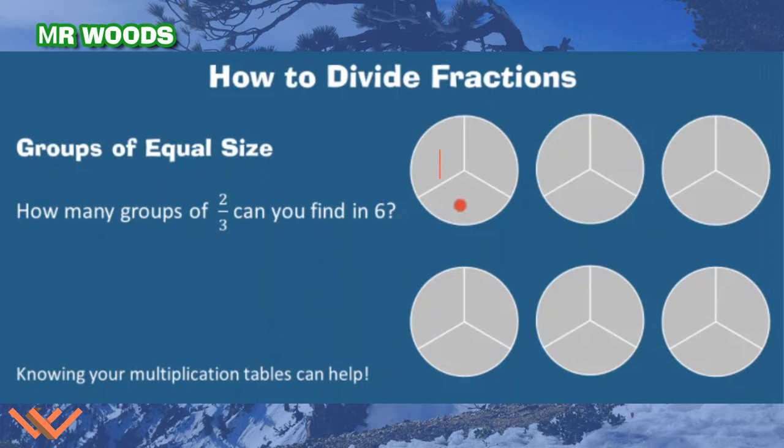Well, I have 1 group of 2 thirds. This is my 2 groups of 2 thirds. 3 groups of 2 thirds. 4 groups of 2 thirds. There's 5 groups of 2 thirds. 6 groups of 2 thirds. 7 groups of 2 thirds. 8 groups of 2 thirds. And 9 groups of 2 thirds. And 6. Wait a minute. How did we determine that?